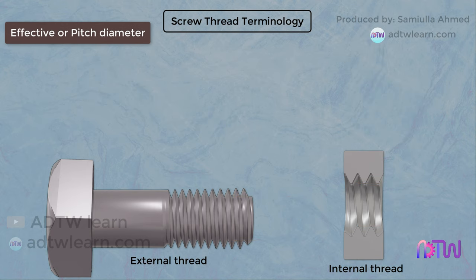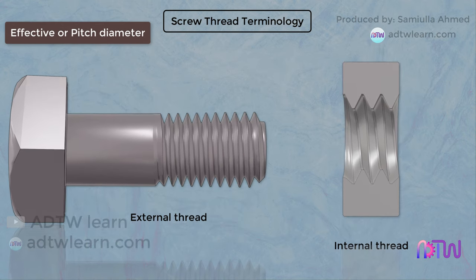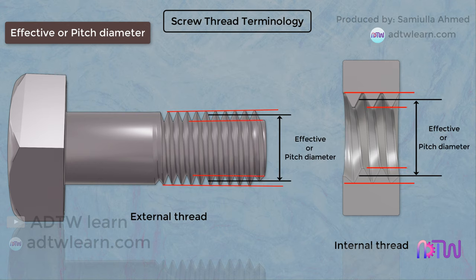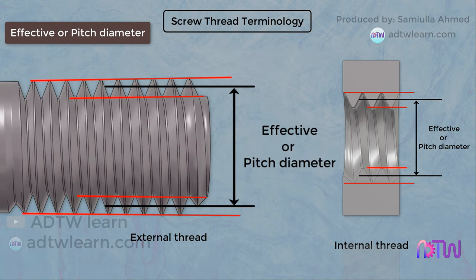Effective Diameter or Pitch Diameter: the effective diameter is halfway between the major and minor diameters. It is the mean diameter between the major and the minor diameter of the screw thread. It is the diameter where the thickness of the thread and the space between two threads are equal. Accurate measurement of this diameter requires specialized equipment.